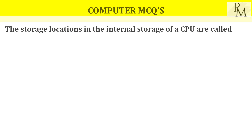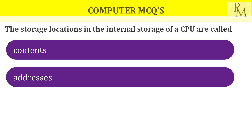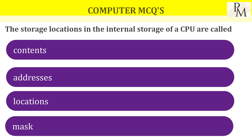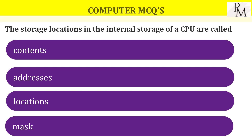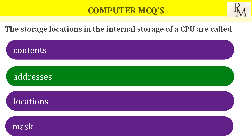The storage locations in the internal storage of the CPU are called as? The answer is addresses. The storage locations are identified and considered by their address.